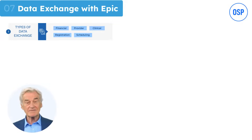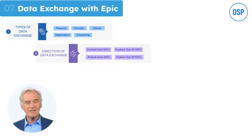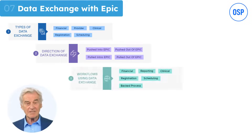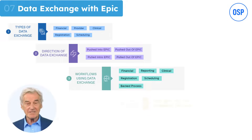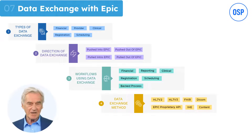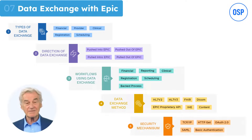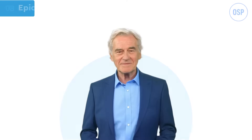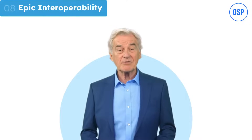The parameters of data exchange design include: firstly, types of data exchanges — they can be clinical, financial, registration, and so on. Next is the direction of the exchange, meaning whether the data is pushed in or pushed out of Epic. Then come workflows using this data exchange, which can be clinical, scheduling, reporting, and so on. This is followed by methods of exchange such as FHIR, HL7 version 2 or 3, and Direct messaging. Finally, security mechanisms, which are basic authentication, SAML, or OAuth 2.0.